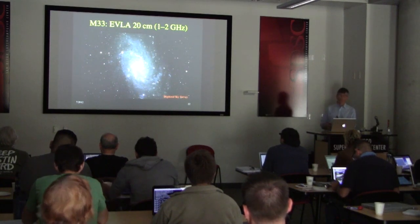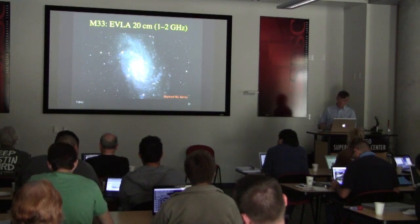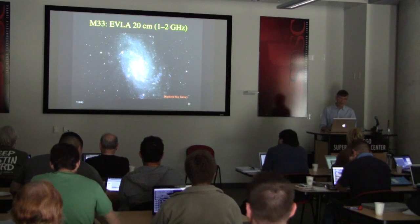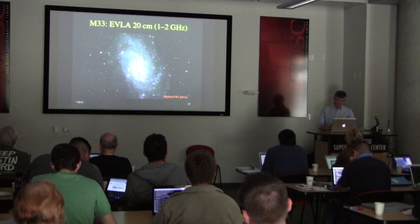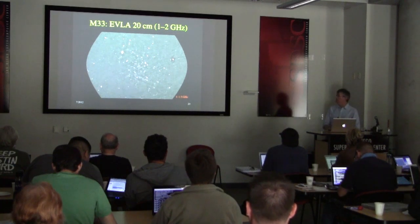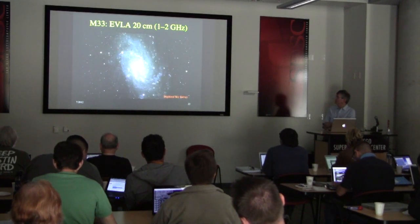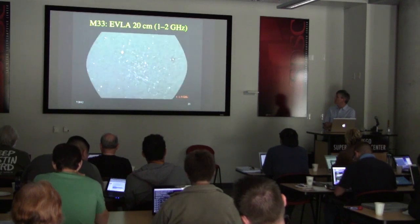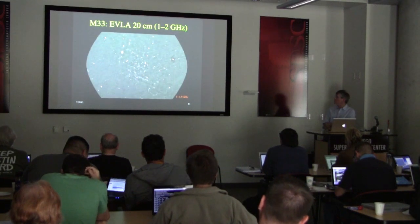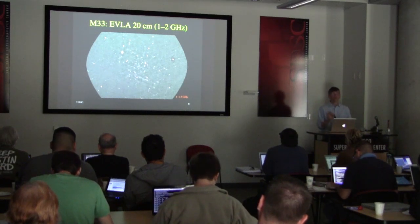Here's an example of wide-bandwidth imaging we've been working on — the galaxy M33. We have about 16 hours of EVLA data in the 1–2 GHz band. After a few months of processing, we create an image showing connections to star formation regions in M33. This survey is mainly intended to look for supernova remnants in M33.